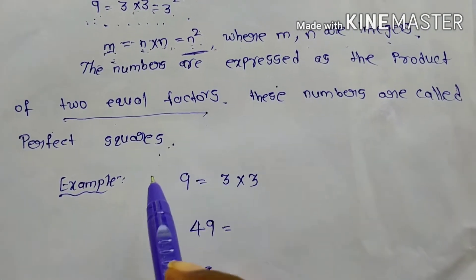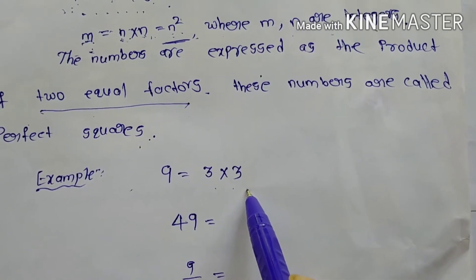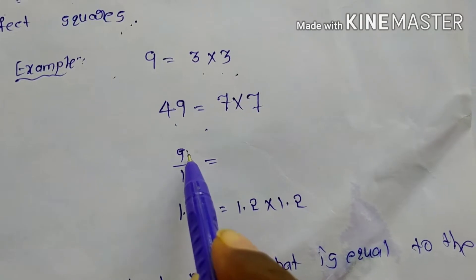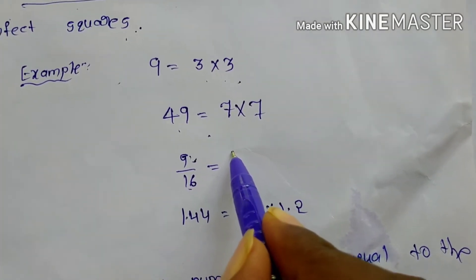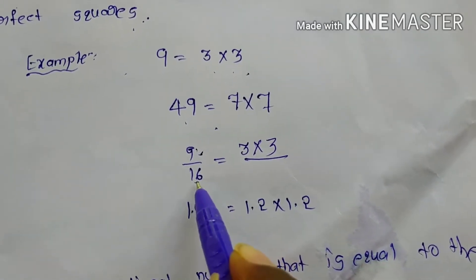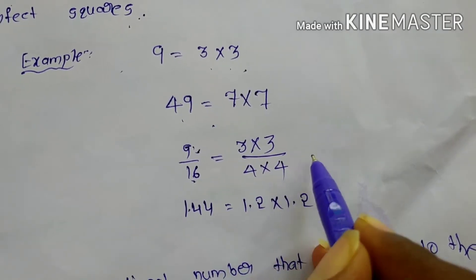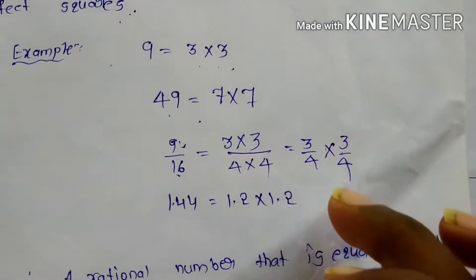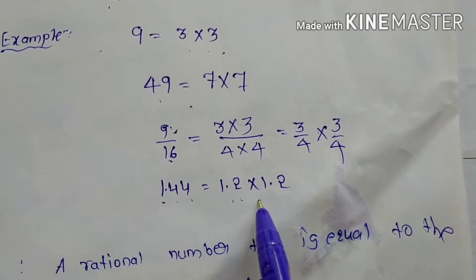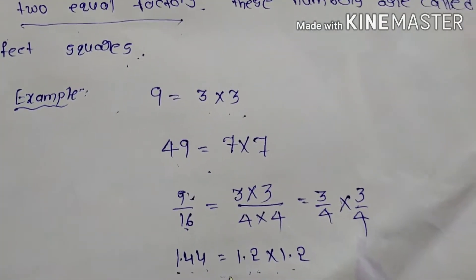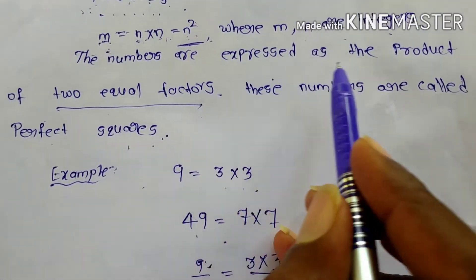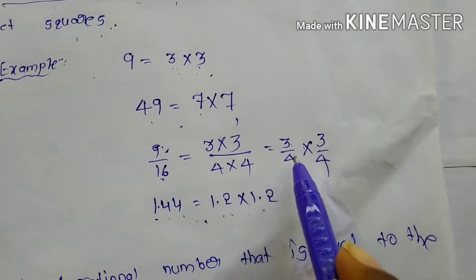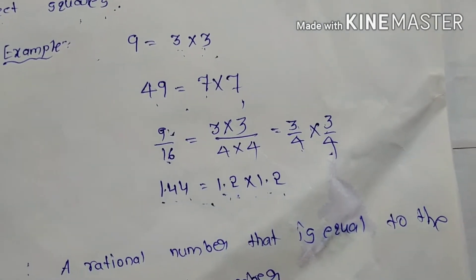These numbers are called perfect squares. 9 = 3 × 3, that means 9 = 3 squared. We can also write 49 = 7 × 7 = 7 squared. In the similar way, 9/16: we can write 9 as 3 × 3, and 16 as 4 × 4, so 9/16 = (3/4) × (3/4), where 3/4 is a rational number. Also, 1.44 can be written as 1.2 × 1.2.